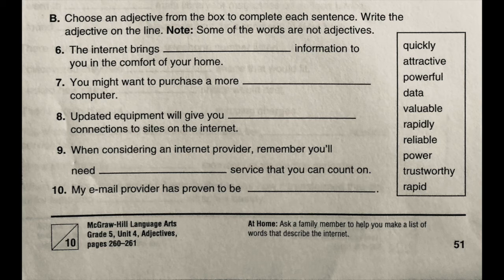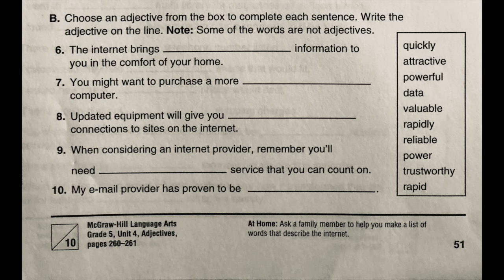Let's look at number 6 on Part B: 'The internet brings blank information to you in the comfort of your home.' The noun after the blank is 'information,' so I'm looking for a word that describes what kind of information. Going through the box: 'quickly information' — notice the L-Y ending on 'quickly'? That tells you it's not an adjective, it's an adverb. Same with 'rapidly' — that L-Y ending means adverb.